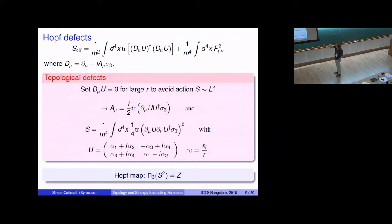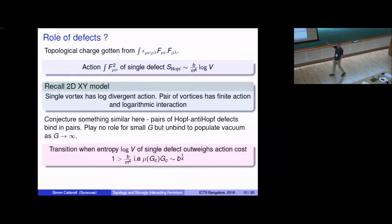Well, the action, of course, you can see very, it's obvious, there's four derivatives here in integration d4x. So this thing is log-divergent in the volume. So a single defect of the kind I've talked about will diverge logarithmically and be completely suppressed in the infinite volume limit. But if you, that should make you think about the two-dimensional XY model because there's an analogous statement you can make there. A single vortex in the 2D XY model also has a log-divergent action. And what happens in the XY model is you end up binding pairs of vortices and anti-vortices together in order to get to a finite action configuration. And in fact, those things are then logarithmically bound together. That's what happens. So you can conjecture that something similar might happen here. Pairs of Hopf or anti-Hopf defects can bind together in pairs.